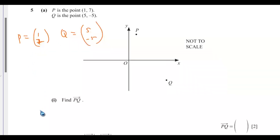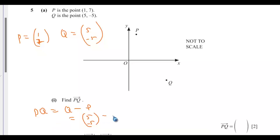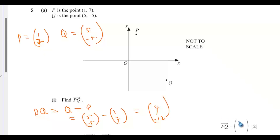So to get PQ, PQ will be equals to Q minus P. That will be equals to 5, negative 5, minus 1, 7. So this will be equals to 4, negative 12.